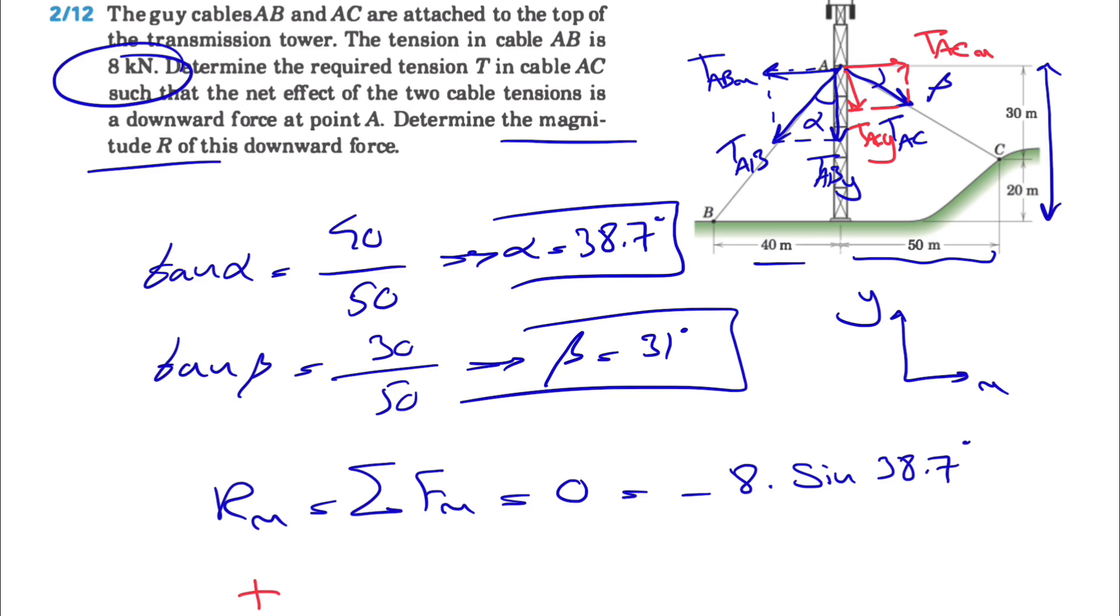it's positive and the tension is T. This time we will have cosine of beta, which we know is 31 degrees. And this will be equal to zero.